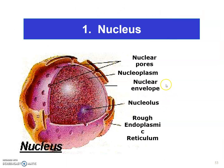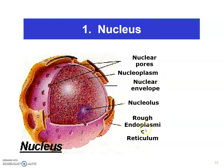For the structure of the nucleus, as we can see, it consists of double layers of membrane, which is the nuclear envelope. They have nuclear pores that appear on the membrane. We also have nucleoplasm. The rough endoplasmic reticulum, another organelle, is located just beside the nucleus.